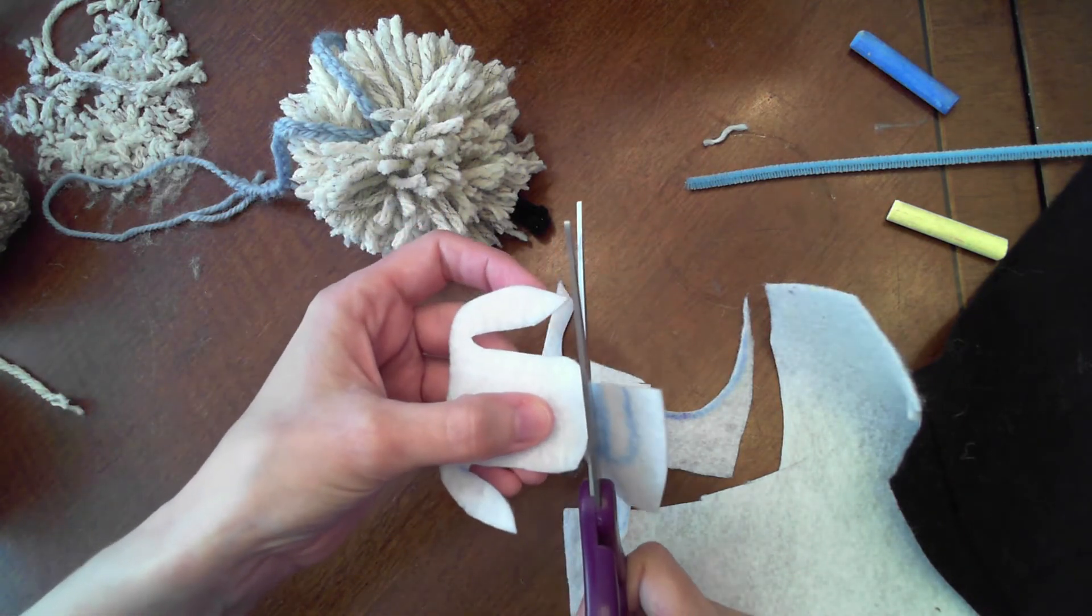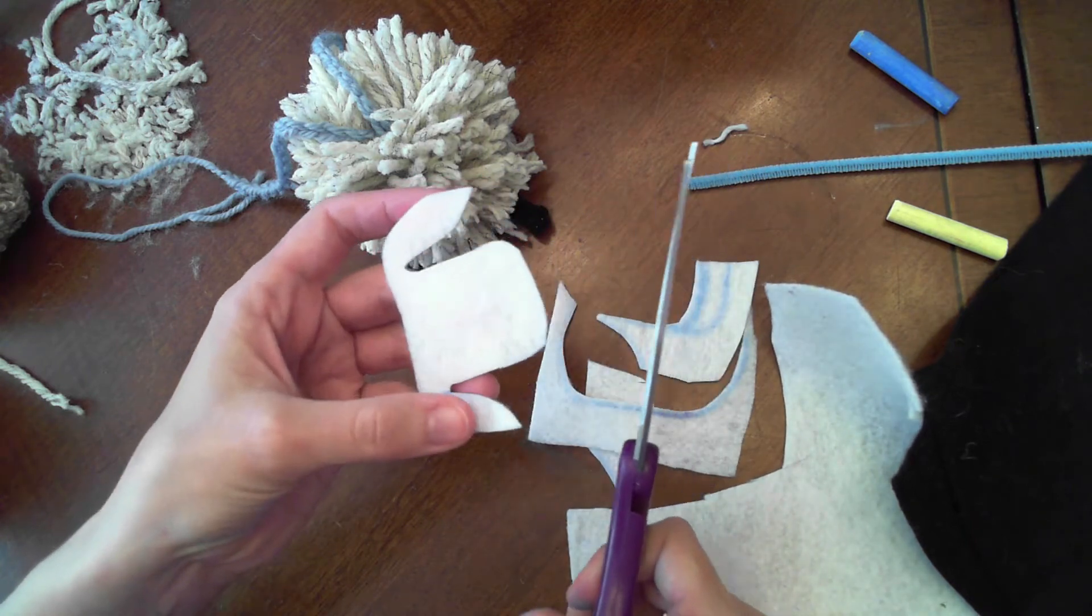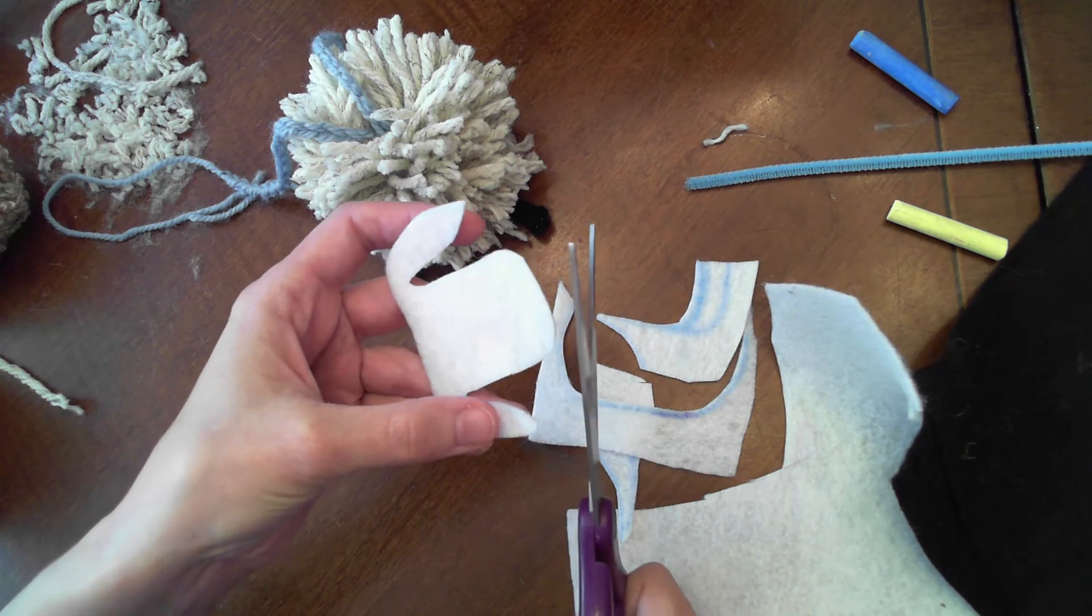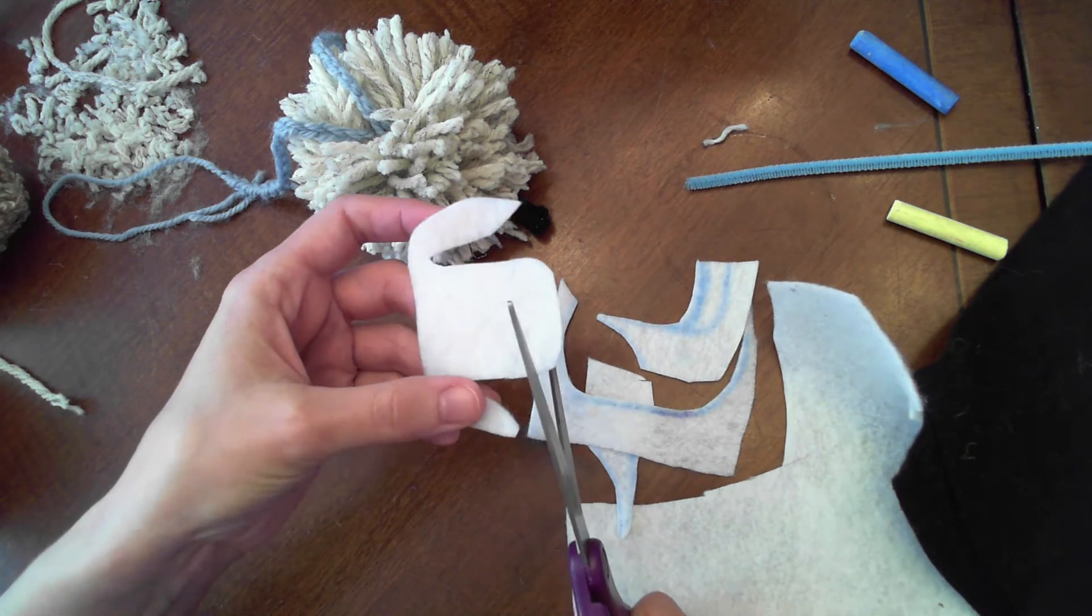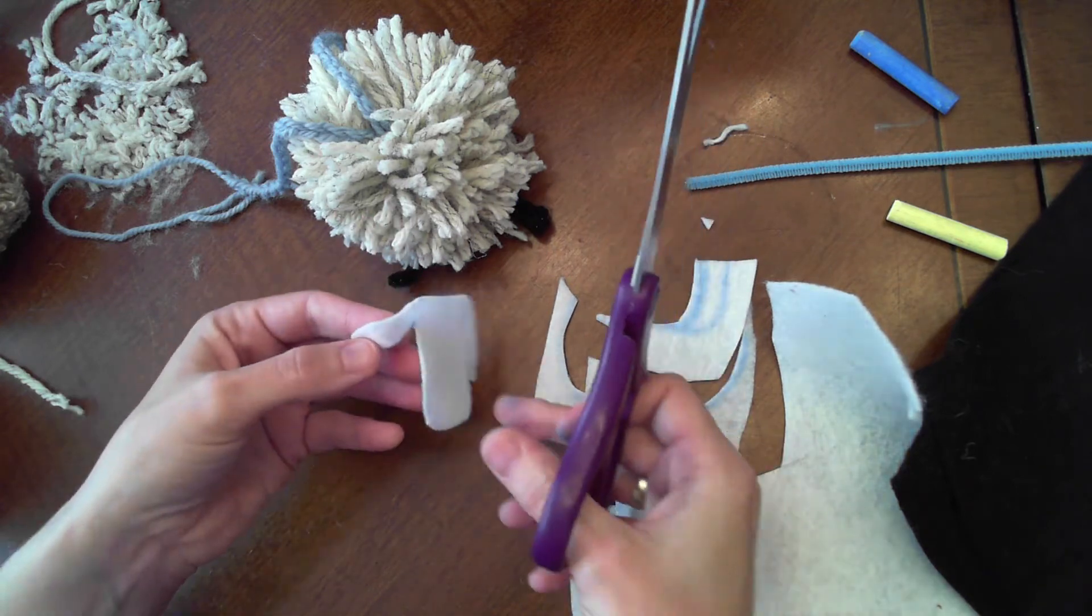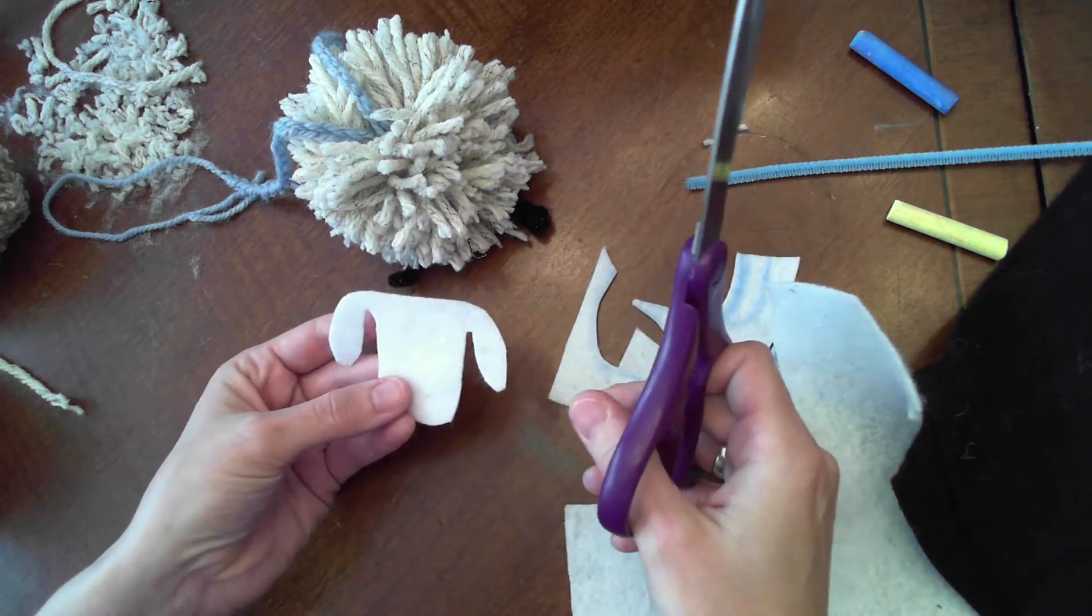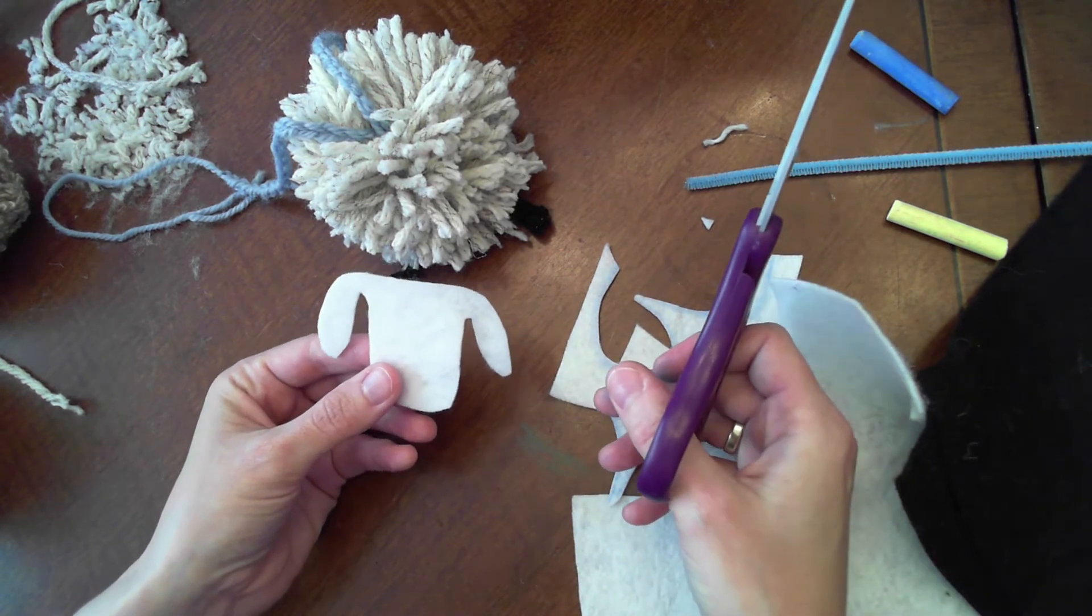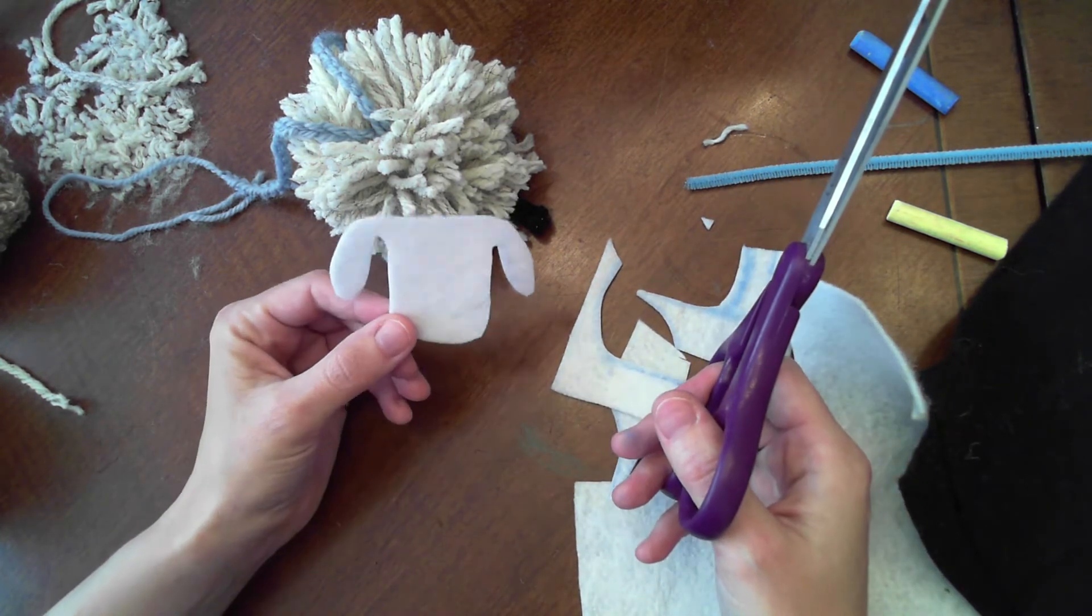I have found for using chalk on felt that it mostly can rub out or you might need a damp washcloth to really get it out but I would go easy. I would not load up the chalk on your felt as you're cutting it out. So here's the face I'm going to work with.